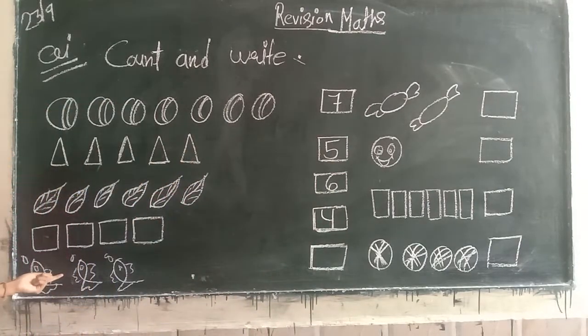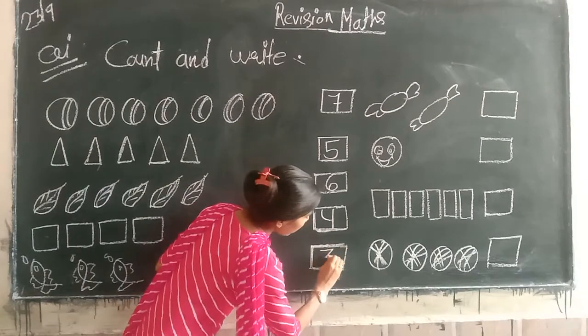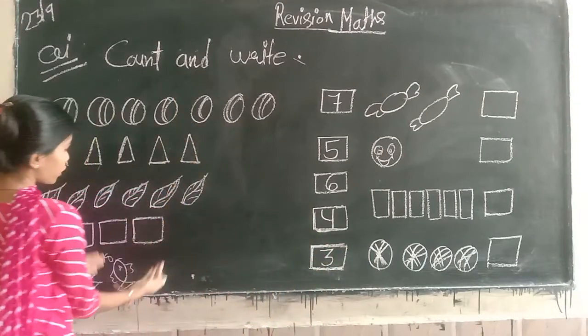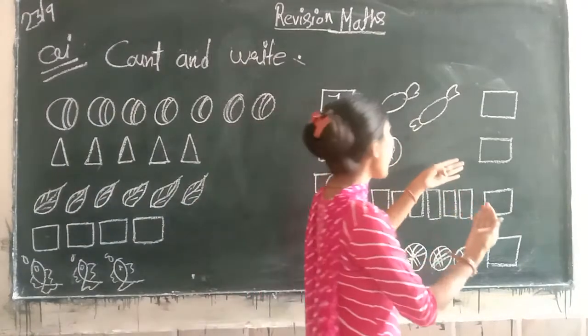Next, fishes. How many? One, two, three. Fishes, how many? Three. We write number three. How many objects?